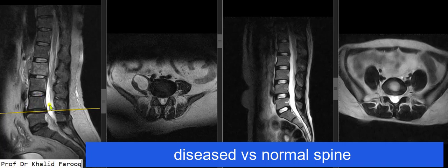...we can see there is reduction in the hydration pattern of the lower two lumbar discs, suggesting disc desiccation or degenerative changes in these discs. There is no soft compressive disc disease, as all the discs are within their normal position.